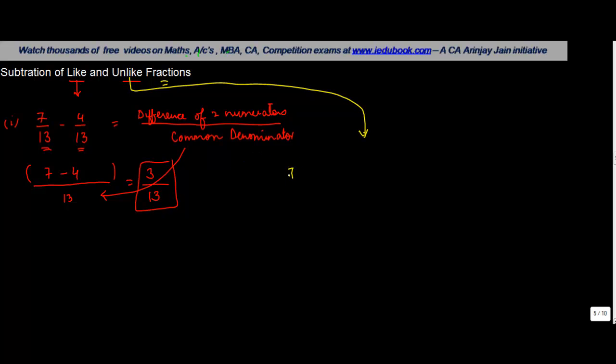So let's say for example, you had 7 upon 13 minus 4 upon 8. Again as we saw earlier, there are two methods of doing this. The first method is convert into like fractions, the simplest one.